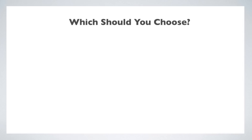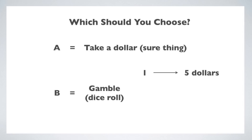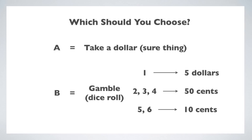Here's a decision problem to illustrate an expected value calculation. You visit Grandma the gambler. Grandma likes to give gifts, but she always gives you a choice. Grandma says: here, you can take this dollar — it's a sure thing. Or you can roll this six-sided die. If the die rolls a one, you get five dollars. But if you roll a two, three, or four, you only get 50 cents. And if you roll a five or a six, you only get 10 cents. So here's your choice: do you take the dollar, or do you roll the dice?